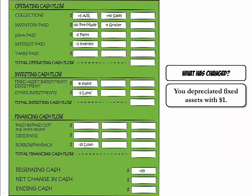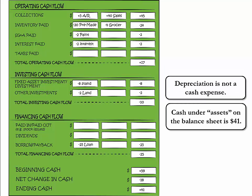Depreciation is not a cash expense, so it does not affect the cash flow statement. We can now finish up our cash flow statement for Week 4. Our net change in cash for the week was minus $18, bringing our ending cash to $41 — the same value as cash under assets on our most recent balance sheet.